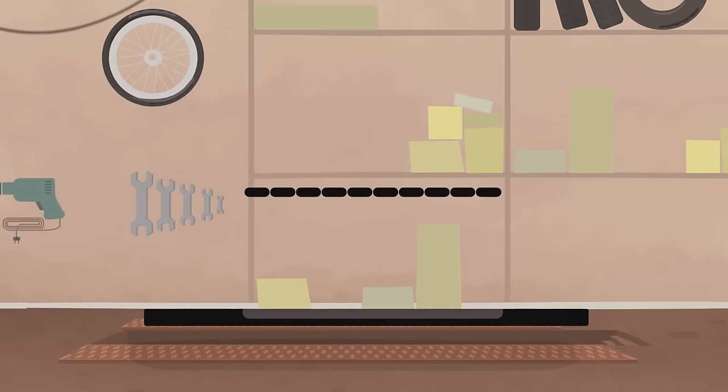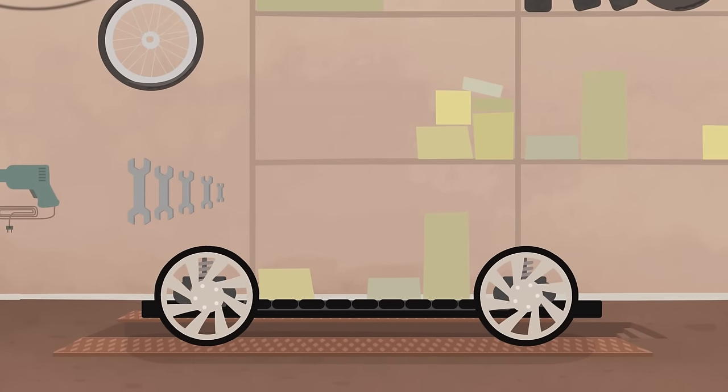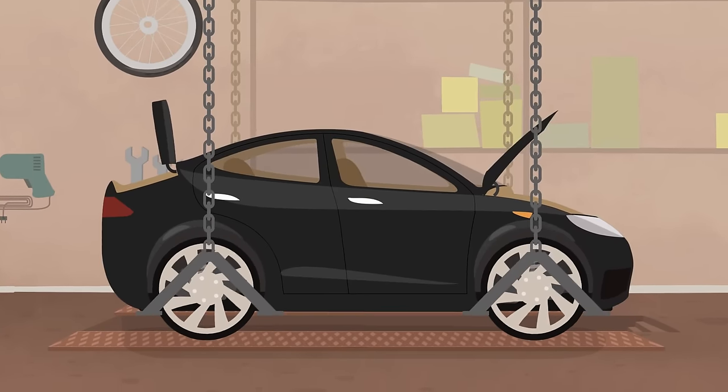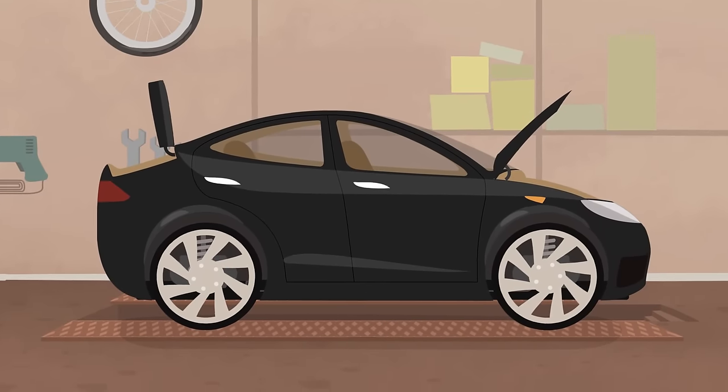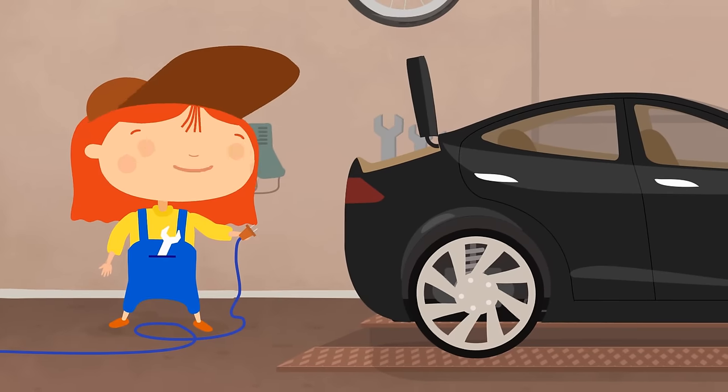Now everything is clear. This is an electric car. It means we must assemble the car back and charge the accumulator.